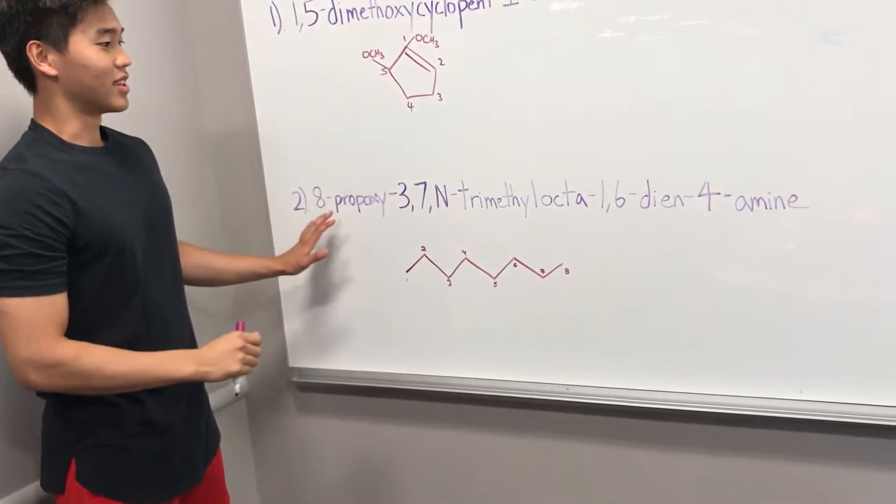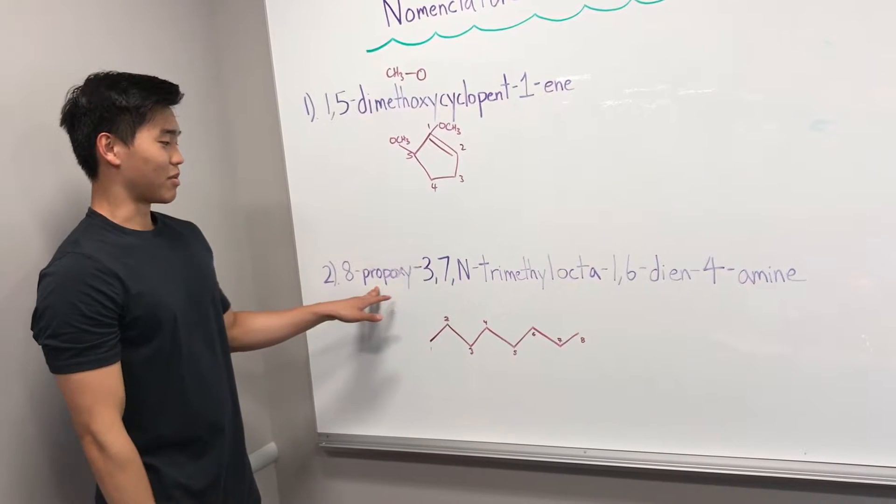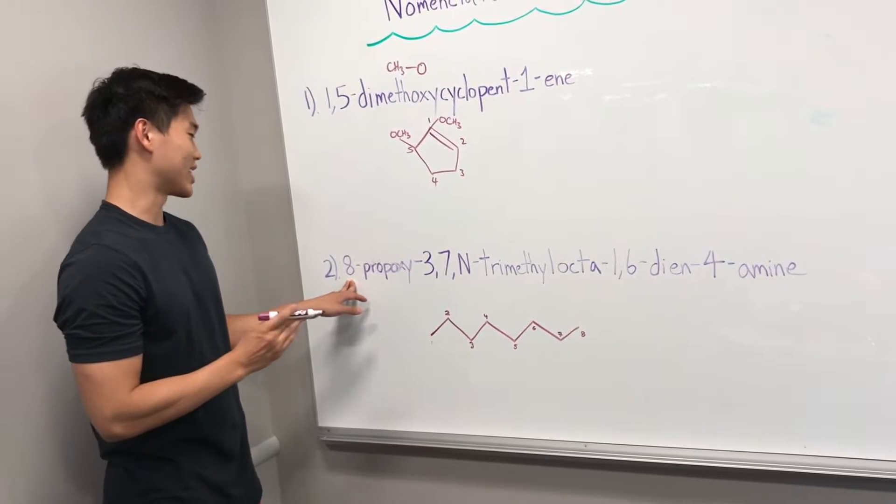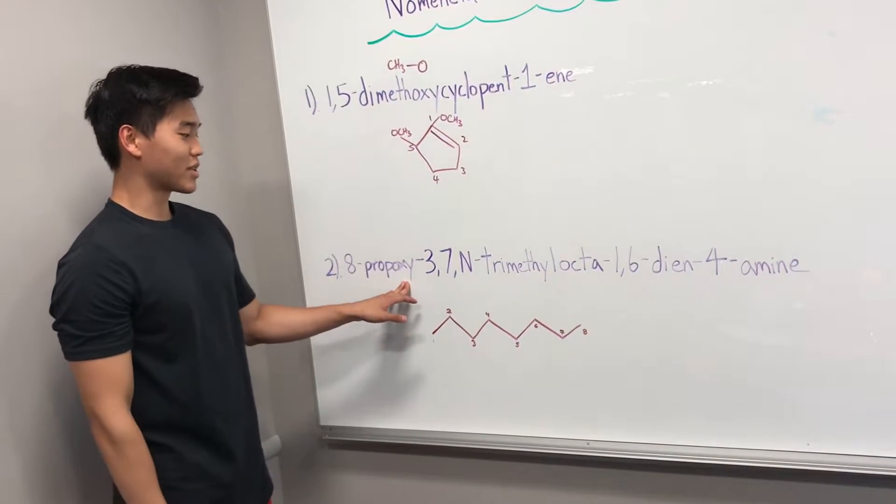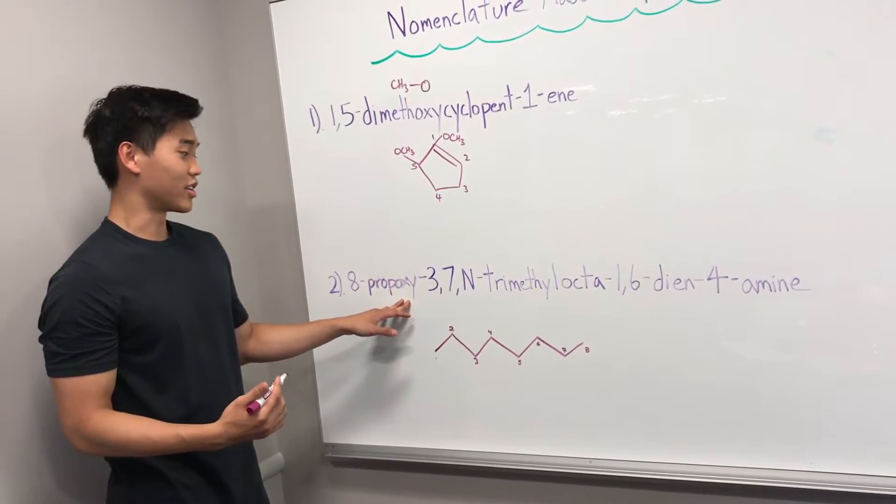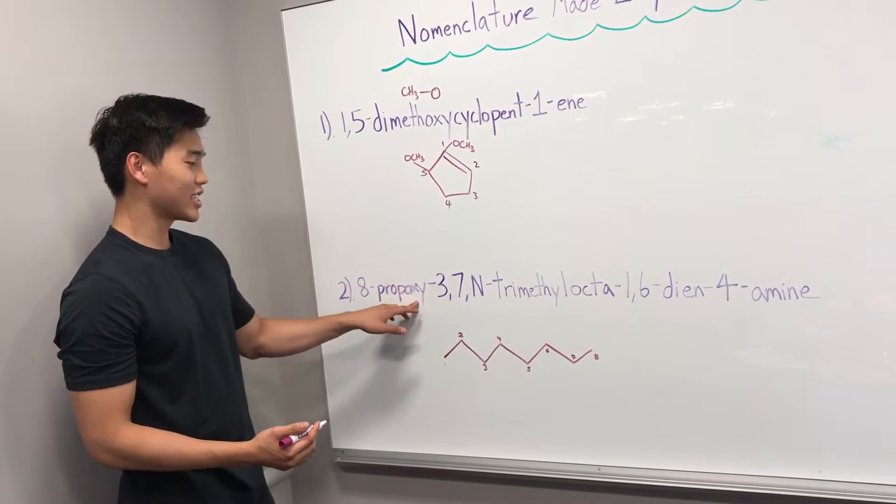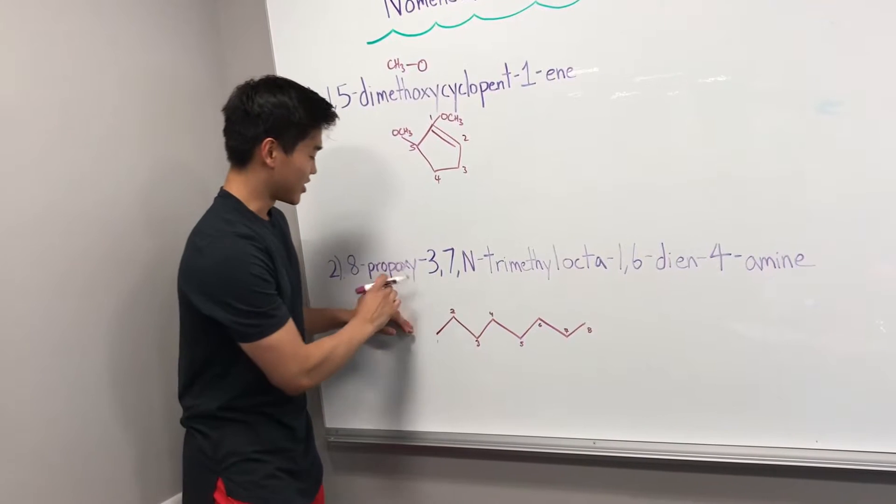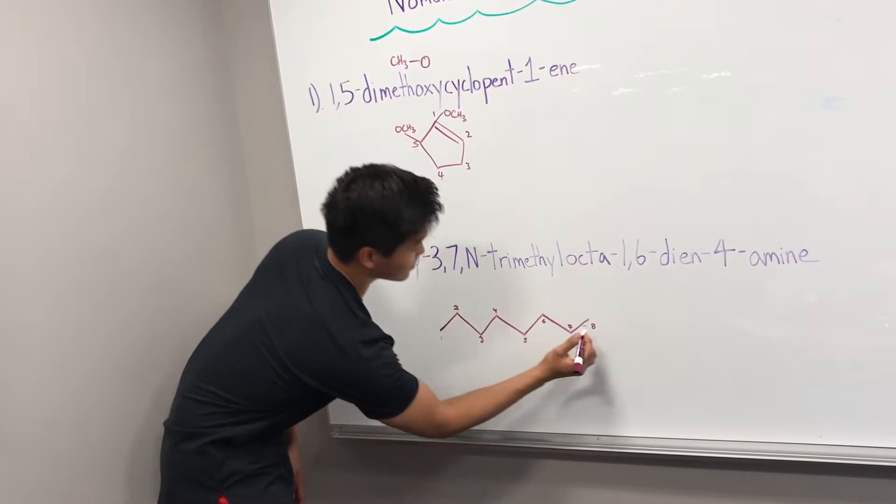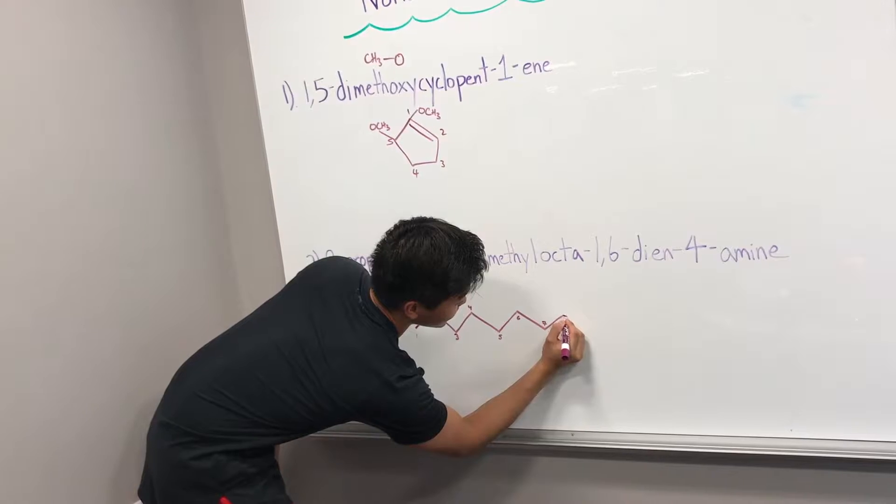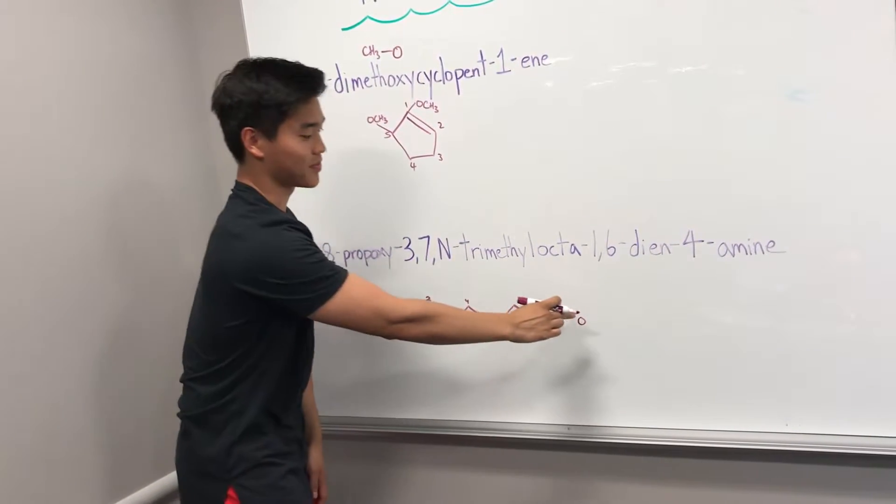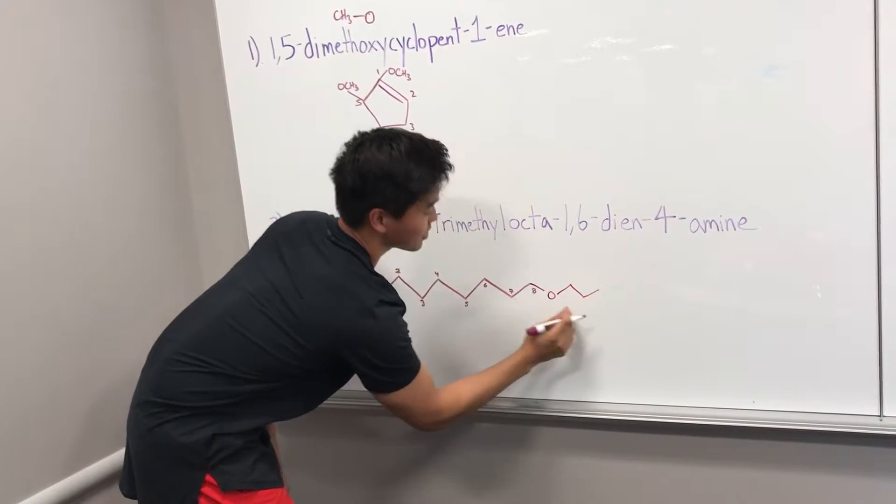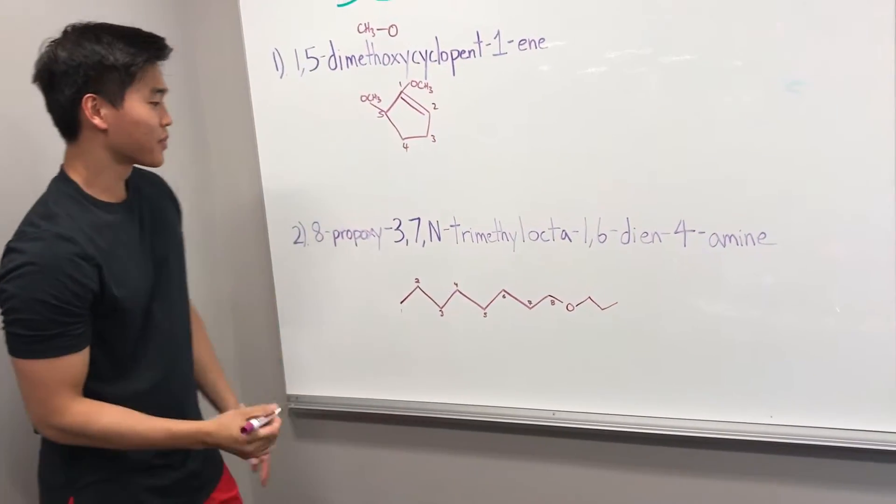So we're going to start from left to right. So 8-propoxy is signifying that the eighth carbon is special, like Frank said. And so we're going to have an epoxy group there. And like the earlier problem, oxy is going to be an oxygen, and you're going to have a propyl chain connected to that. So it's going to be an oxygen here, and then a propyl group. So a meth-eth-prop of three carbons.